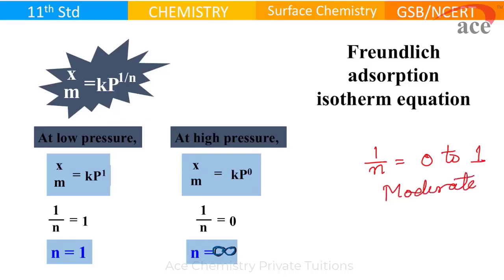For moderate pressure, 1 by n will be between 0 and 1. For low pressure, 1 by n will be 1, and for high pressure, 1 by n is 0. If 1 by n is 1, then n is 1. But if 1 by n is 0, then n is infinite.